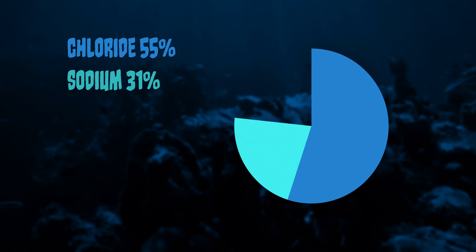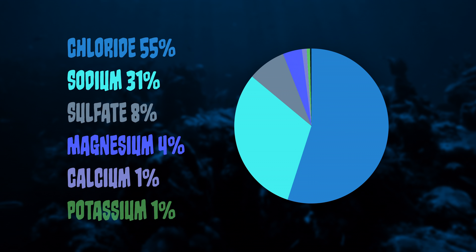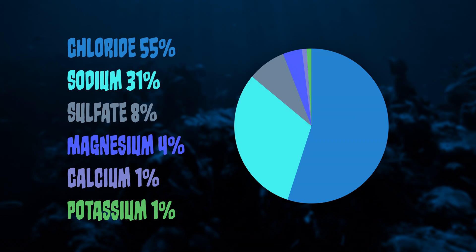The six main ions found in the ocean are chloride, sodium, sulfate, magnesium, calcium, and potassium. Together, they make up 99.6% of the total salt. Although the proportion of ions remains constant, the total salinity can vary, ranging from about 32 parts per thousand at the low end to 37 parts per thousand at the high.